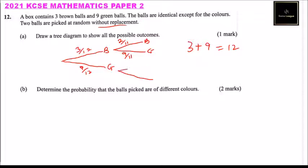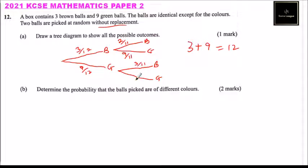If you picked a green ball the first time, you may pick a brown or a green on the second pick. If you pick a brown, the brown remains the same so it is three over 11, as the total reduces by one. If you had picked a green ball first, then the green reduces by one and the total reduces by one. That way you will be able to get one mark.